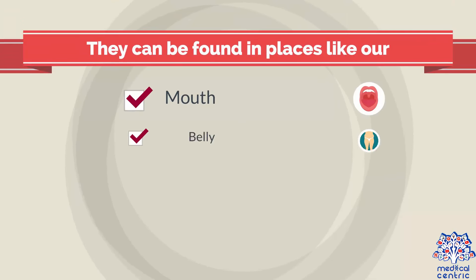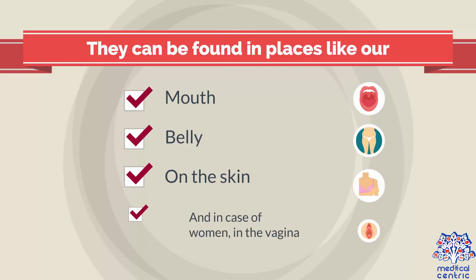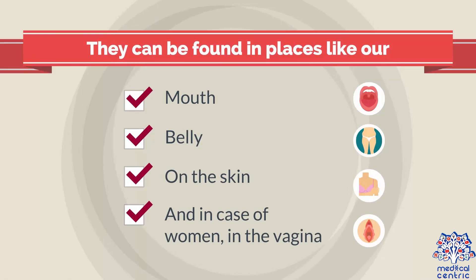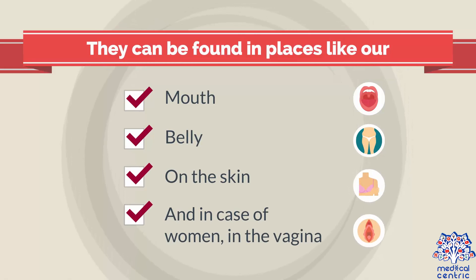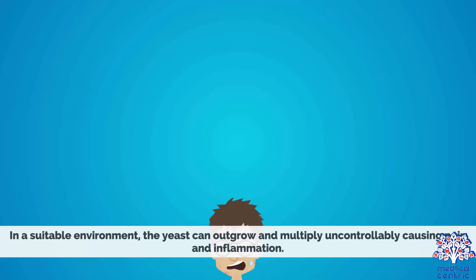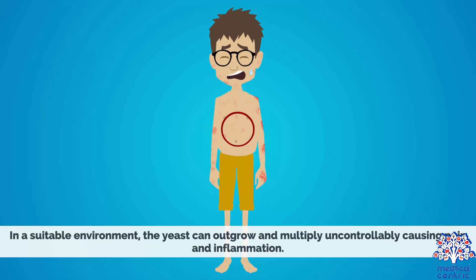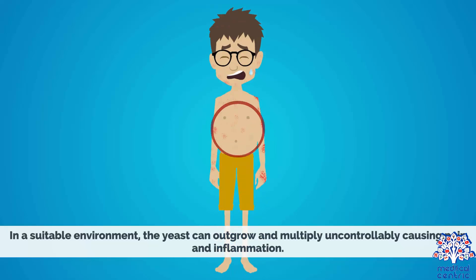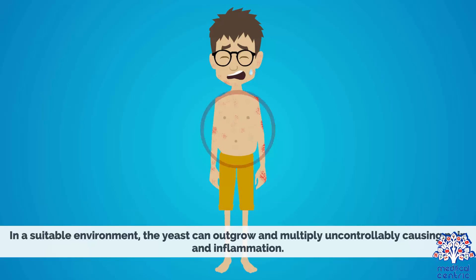Candida can be found in places like our mouth and belly, on the skin, and in case of women, in the vagina. In a suitable environment, the yeast can outgrow and multiply uncontrollably, causing pain and inflammation.